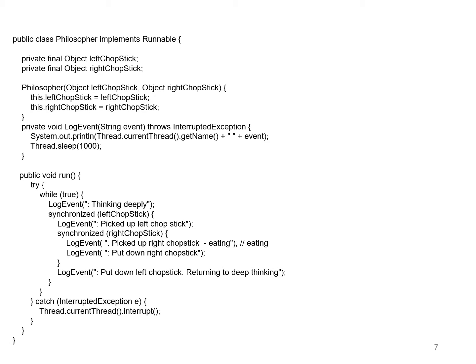Here's an example of implementing this in Java as a thread. We have a Philosopher class which implements Runnable. It has two chopsticks which are passed to it in its constructor and assigned to local members. Different chopsticks are passed to different philosophers, but each chopstick will be shared by at least one other philosopher given the topology of the table. In the run method, forever they log an event saying they're thinking.